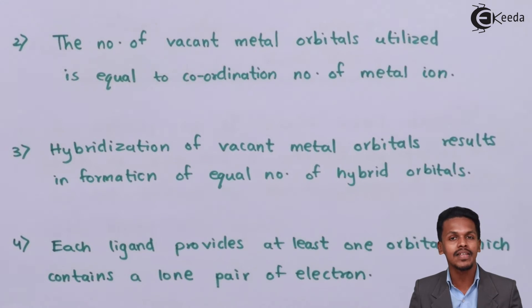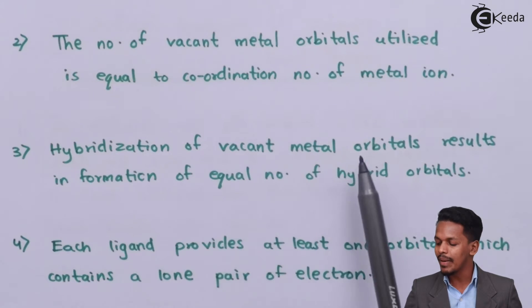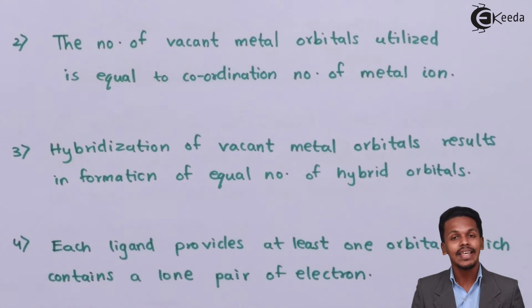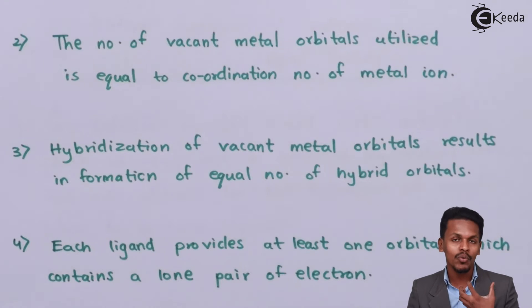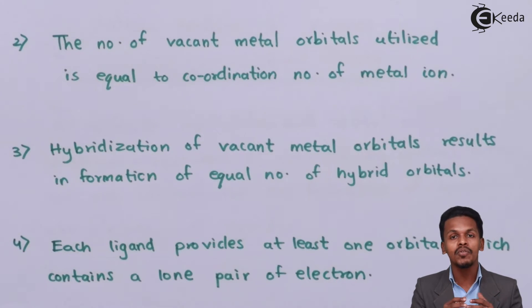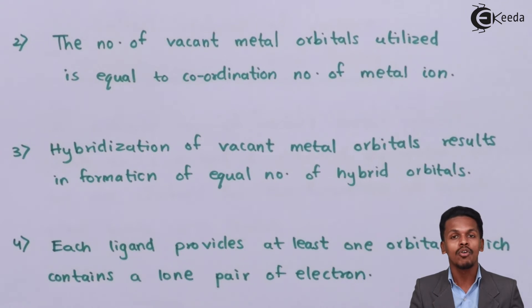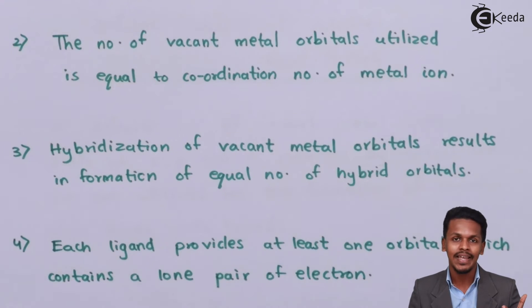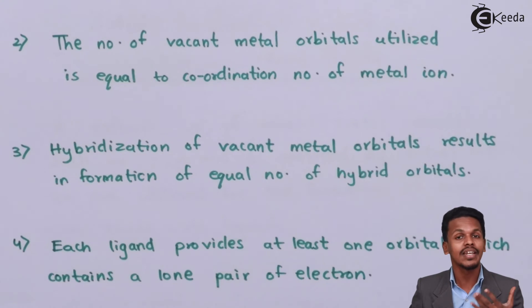The third point: hybridization of vacant metal orbitals results in the formation of an equal number of hybrid orbitals. The central metal atom undergoes a particular hybridization, producing orbitals that overlap with the orbitals of the ligand. The extent of this overlap decides the bond strength between the metal and the ligand, and the hybridization also determines the shape of the complex — as discussed in the chapter on the nature of chemical bonds.